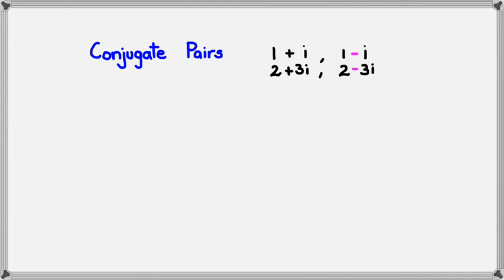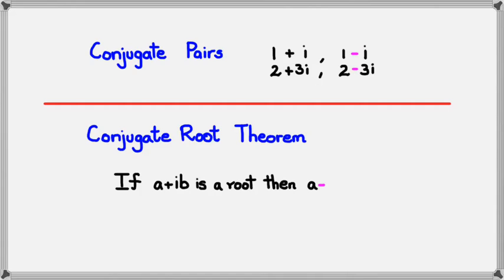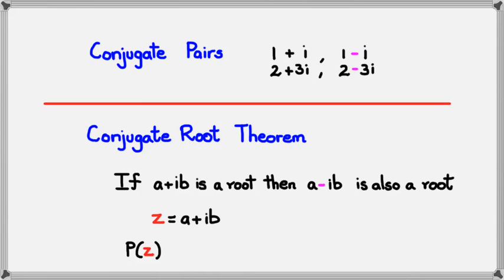Now, what the conjugate root theorem says is this: if a plus bi is a root, then a minus bi is also a root. If you have a complex number a plus bi as a root, then the conjugate of that complex number will also be a root. So if z equals a plus bi, then by the factor theorem p(z) equals 0, and similarly p of the conjugate of z also equals 0. So if a plus ib is a root, then a minus ib is also a root — that's what the conjugate root theorem states.